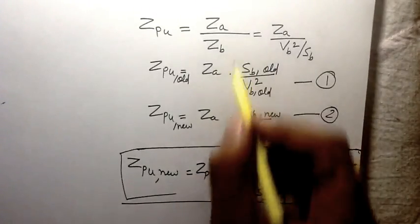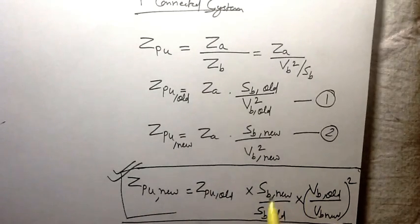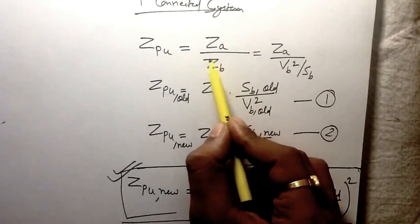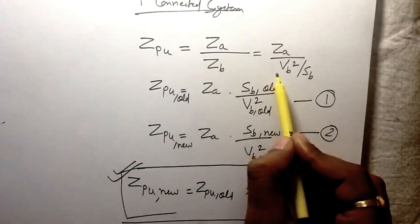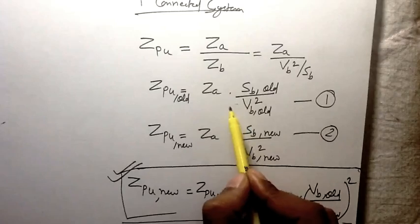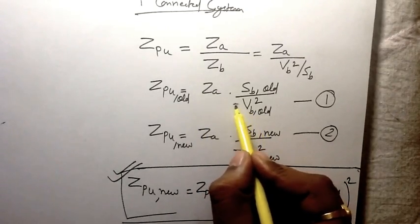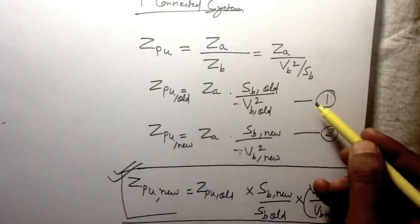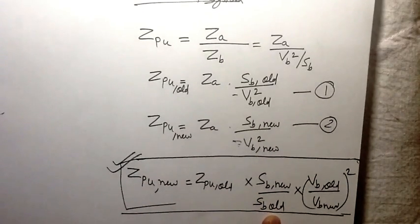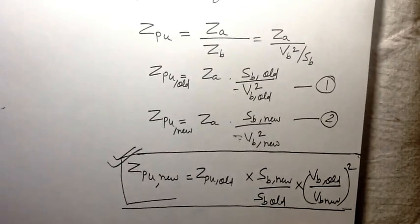Although this derivation used the star-connected system, the formula is also valid for the delta-connected system. In the delta-connected system, the base impedance is 3V_base squared divided by S_base, so a factor of three appears in both equations one and two. When we divide those two equations, the threes cancel, and we arrive at the same formula. Therefore, this formula is valid for both star-connected and delta-connected systems. We will now see a question based on this formula.